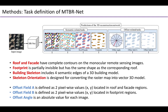For the semantic-related tasks, we design a task for roof and facade segmentation, which have coupled contours, and a footprint segmentation task, which is often partially invisible but has the same shape as the corresponding roof. The building skeleton of a 3D building model and the skeleton orientation are designed for converting the raster map into a vector 3D model.